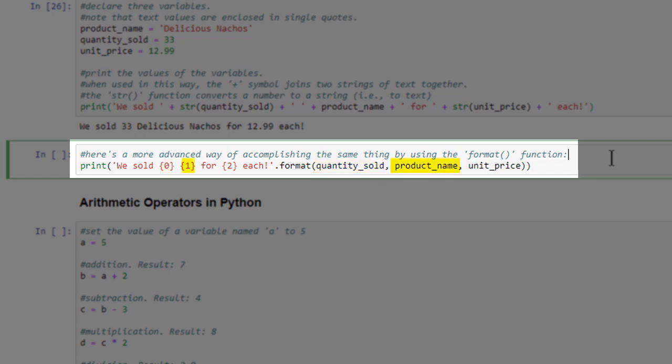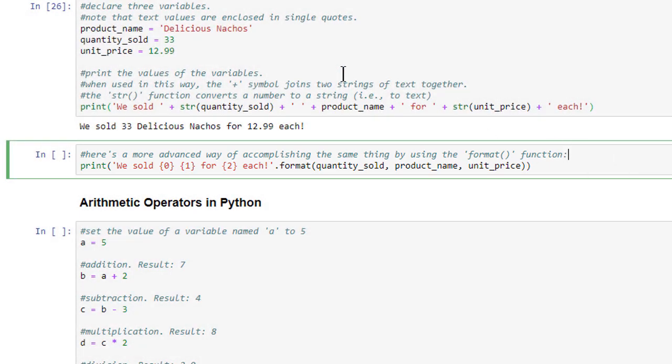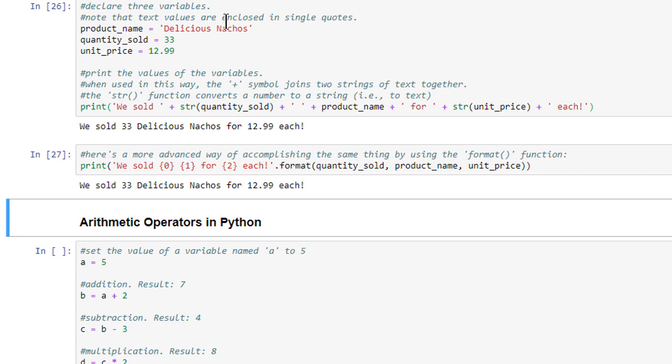One, then, refers to the ProductName variable, and two refers to the UnitPrice variable. Thus, when we click the Run button, Python will take the values of these three variables and automatically insert them into our string at locations 0, 1, and 2. As you can see, the output is exactly the same as the previous code cell, except that we didn't need to do any string concatenation ourselves.